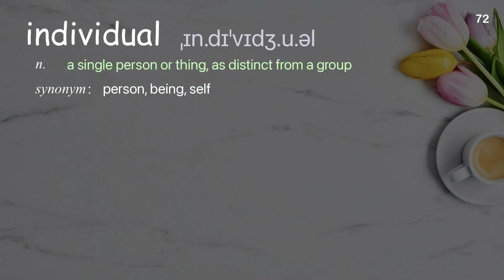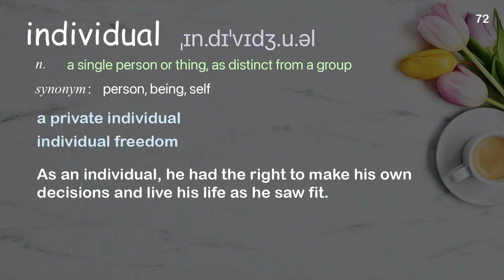Individual: a single person or thing as distinct from a group. Examples: A private individual. Individual freedom. As an individual, he had the right to make his own decisions and live his life as he saw fit.